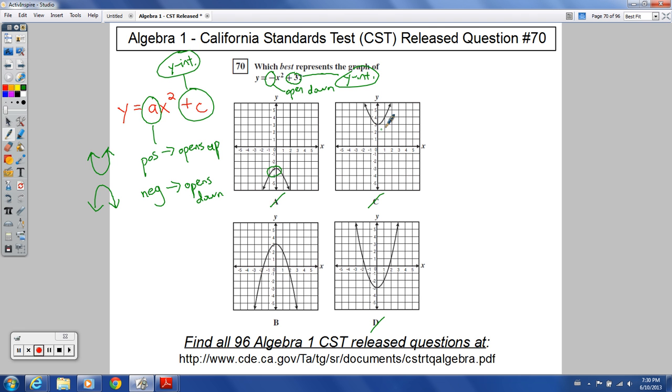This one actually crosses at the right point, but it opens up. This one, you've got both things messed up. So, the right answer for number 70 should be choice B.